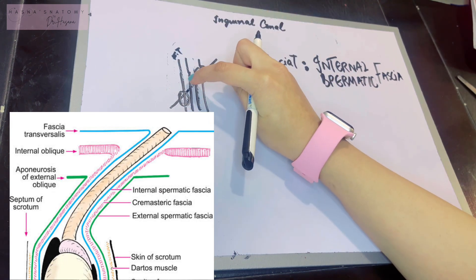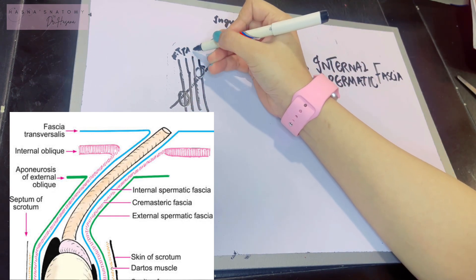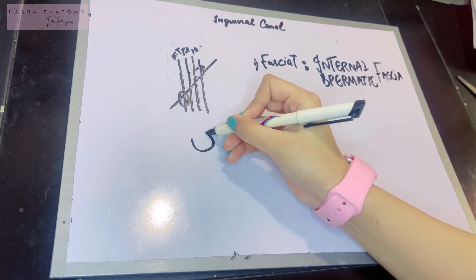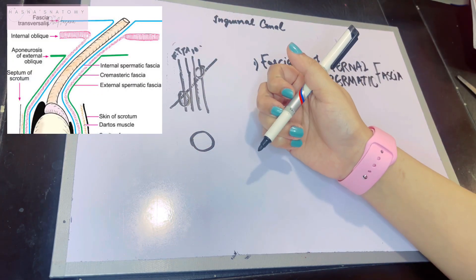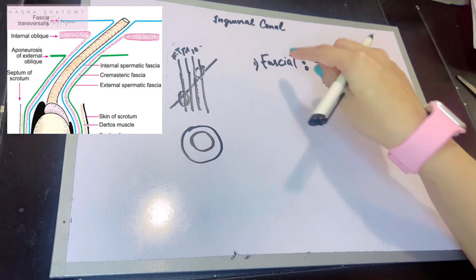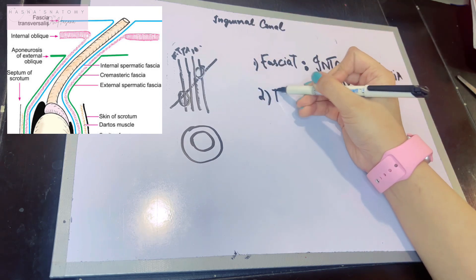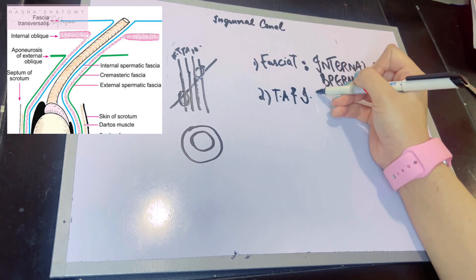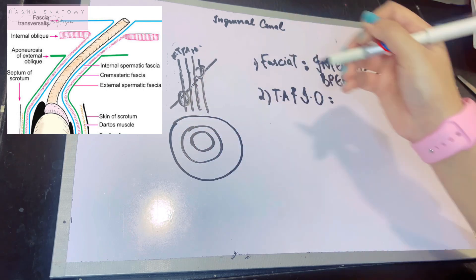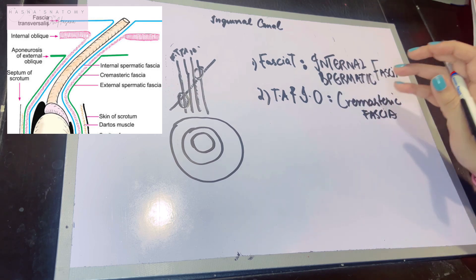The next structures encountered in traversing the canal are the transversus abdominis and the internal oblique, which also come along and form the intermediate covering. This is known as the cremasteric fascia — as we studied before, the cremasteric fascia consists of the cremasteric muscle embedded in connective tissue.